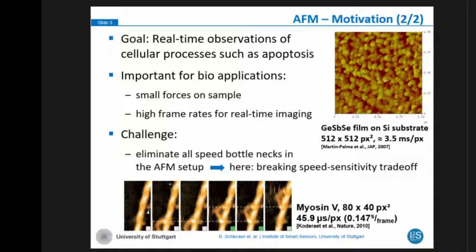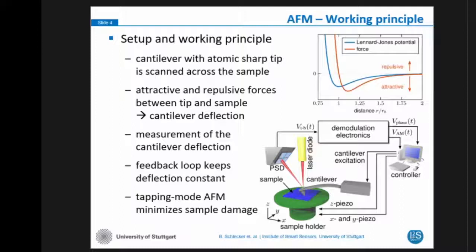Here on the lower part of the slide you see the basic principle of an AFM system. It consists of a cantilever with a sharp tip attached at its end, and this cantilever is scanning across the sample in a raster fashion. Due to the attractive and repulsive forces between the tip and the sample, the cantilever is being deflected. We then measure the deflection, most commonly with the so-called beam deflection method, and demodulate this deflection signal in our demodulation electronics.